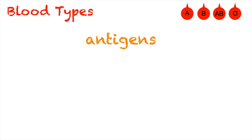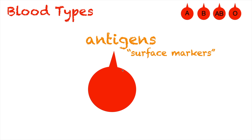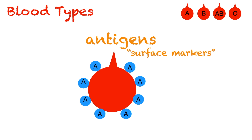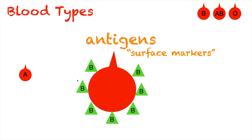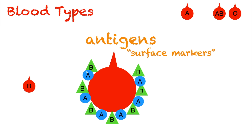Let's start with antigens. Antigens are what we call surface markers. They're called surface markers because they can be found on the surface of the red blood cell. The blood type that you have depends on what kind of antigen you have on your red blood cell. So if you have an A antigen, your blood type is type A. If you have a B antigen, your blood type is type B. If your red blood cell contains both antigen A and antigen B, your blood type is type AB.